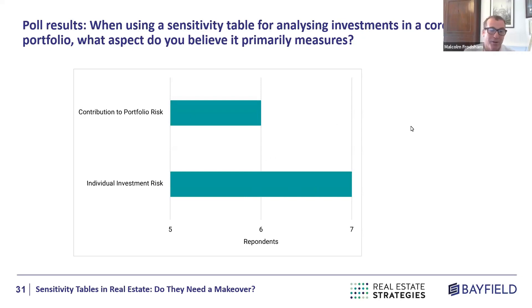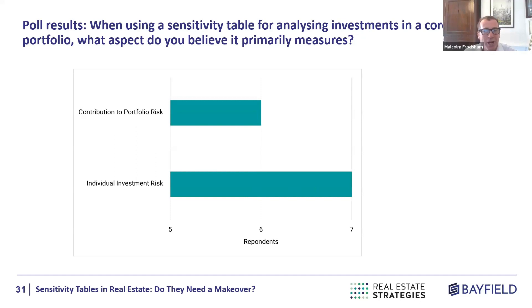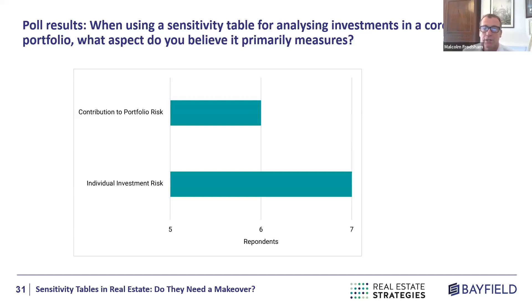If you're using market average rents and yields, you're looking at a diversified holding — portfolio risk. The poll results were basically equally split, which is interesting. In investment committees there are often discussions around whether the sensitivity table represents the portfolio or the individual asset, and there rarely seems to be a consensus. The key thing is just to make sure everyone is aware of which one you're actually doing.